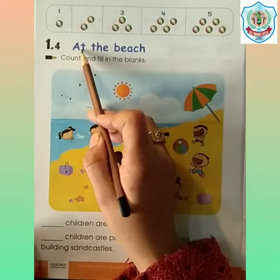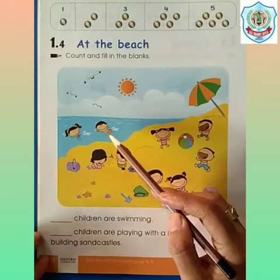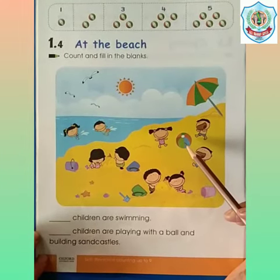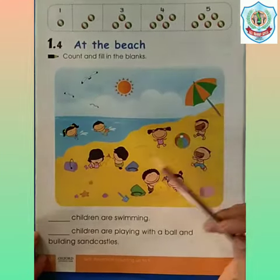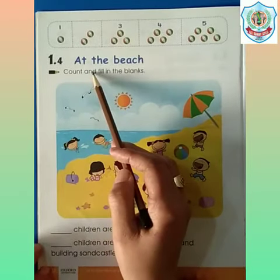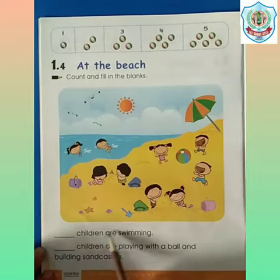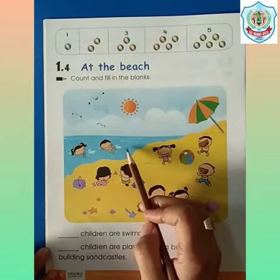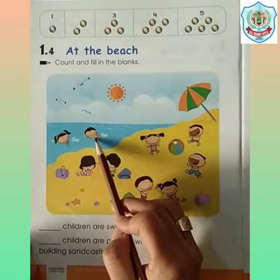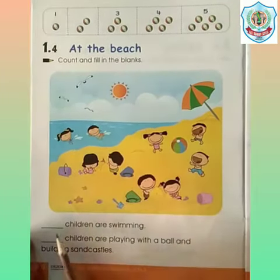Move to the next topic, that is at the beach. Here some children are swimming in the water, some are playing with ball, and some are building sand castles. Now count and fill in the blanks. Dash children are swimming. Let's count how many children are swimming here: 1, 2. Two children are swimming.